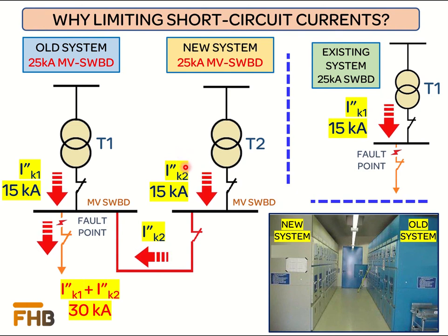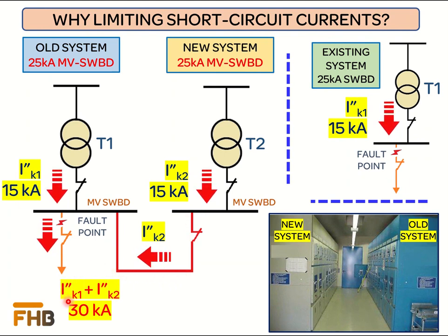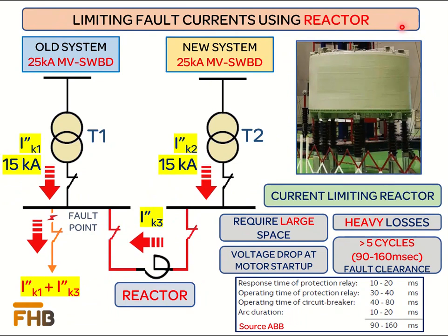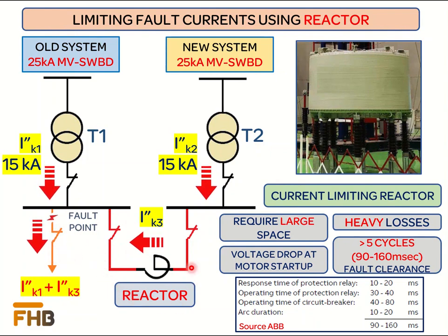The problem starts once we couple the two systems together through a bus coupler, as the combined short circuit of the two systems will be around 30 kA, which is more than the rated short circuit value of the switchgear. One option to reduce the short circuit current entering from one system to another is by increasing the inductance of the current path through the introduction of current limiting reactors.